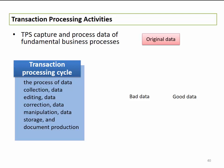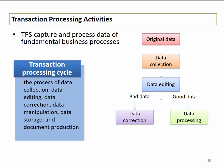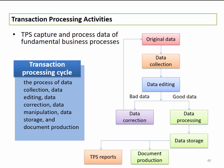We start with the original data, which can come from various sources. That data is sent through to data collection, which proceeds to data editing. At the editing stage, data is classified as either bad or good. If it's bad data, it goes for data correction. If it's good, it continues to data processing, which proceeds to data storage. Data correction alternatively goes back to the original data so the process is repeated. After data storage, we have document production and TPS report generation.